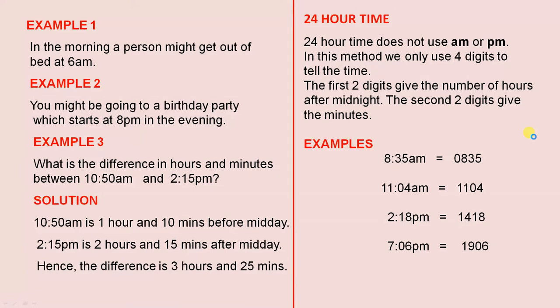Example 1: In the morning a person might get out of bed at 6 AM — that is the morning. Example 2: You might be going to a birthday party which starts at 8 PM in the evening. That is the evening because it's 8 PM.